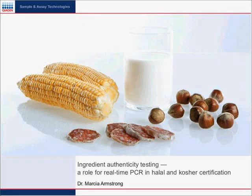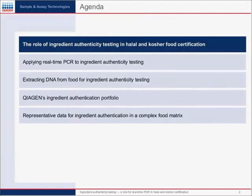Thank you and welcome to everybody for attending our webinar today. The first slide is the agenda for the webinar. We will talk first about the role of ingredient authenticity testing in halal and kosher food certification. We will then talk about applying real-time PCR to ingredient authenticity testing, the extraction of DNA from food for ingredient authenticity testing, finally the Qiagen's ingredient authentication portfolio, and some representative data for ingredient authentication in a complex food matrix.